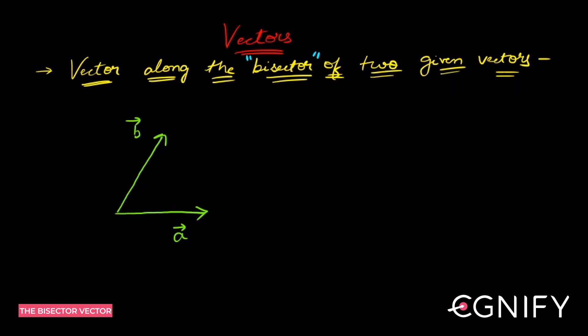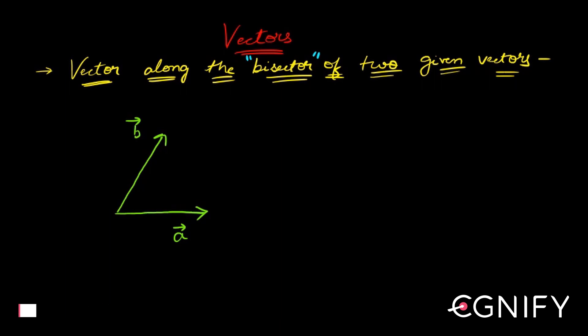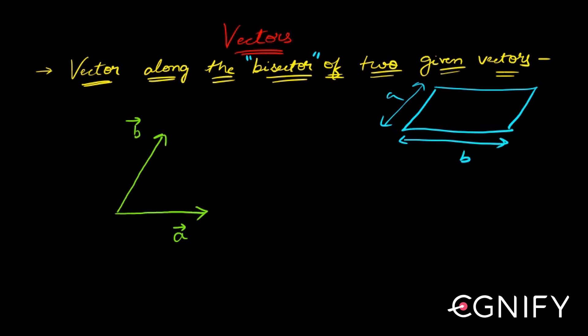It sometimes gets difficult to remember the formula for bisectors. Let's build this concept using something we already know. For example, if I give you a parallelogram where one side is a and the other side is b, and if they are unequal, then the diagonal is the resultant.